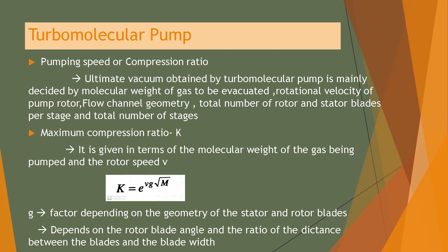The ultimate vacuum obtained by a turbo molecular pump is mainly decided by the molecular weight of the gas to be evacuated, the rotational velocity of the pump rotor, the flow channel geometry, and the total number of rotor and stator blades per stage and the total number of stages. The maximum compression ratio K is given by K = e raised to Vg root M, where G represents a factor depending on the geometry of the stator and rotor blades, including the rotor blade angle and the ratio of the distance between blades to blade width.